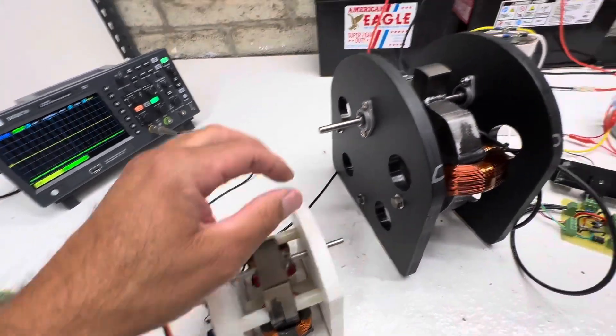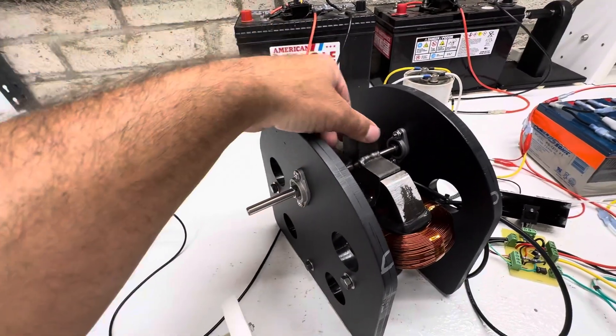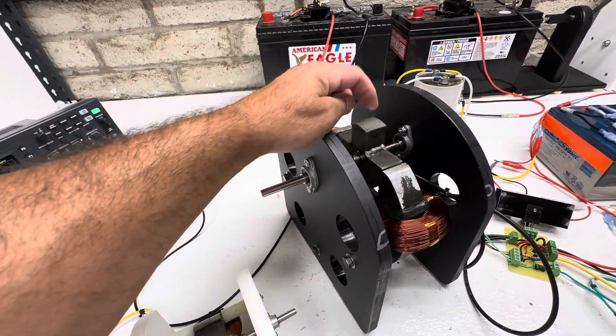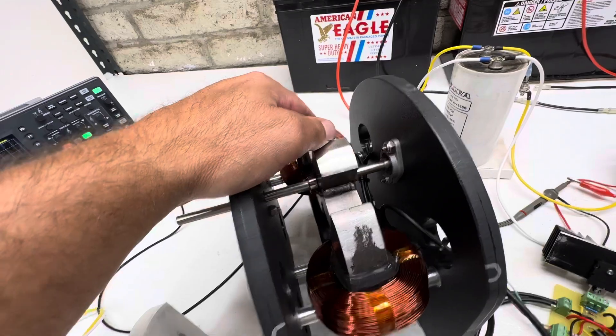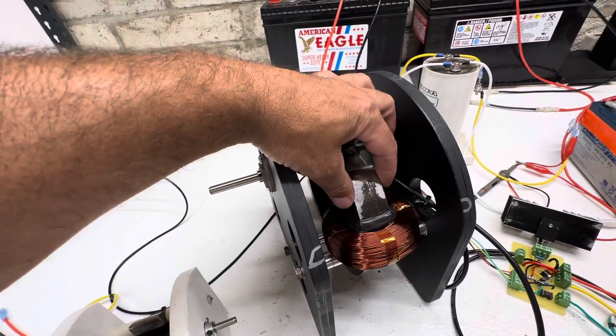This one has the same but it actually has two, so you have four pulses per revolution where this one only has two. Obviously this one's a lot bigger. This is all one-inch solid steel.